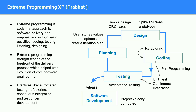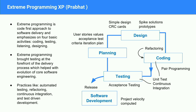Extreme programming is a code-fast approach to software delivery that emphasizes four basic activities: coding, testing, listening, and designing. Coding is the main part — we first code, then go for other things. We also do pair programming and refactoring of code. Sometimes it's said that XP is not that popular because of this code-first approach. Extreme programming brought testing to the forefront of the delivery process, like test-driven development and automated test-driven development. Practices like automated testing, refactoring, and continuous integration are used extensively.